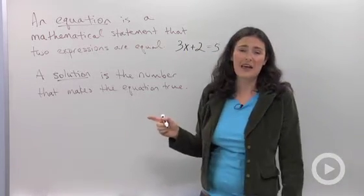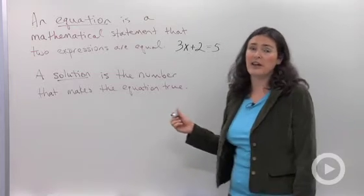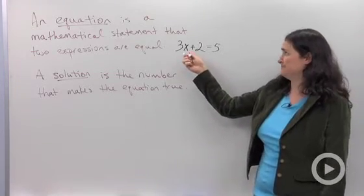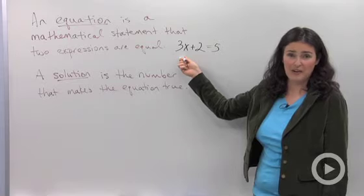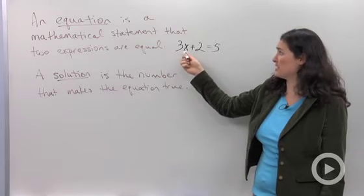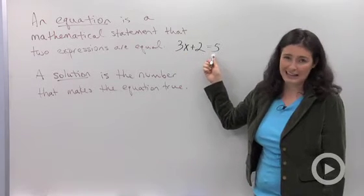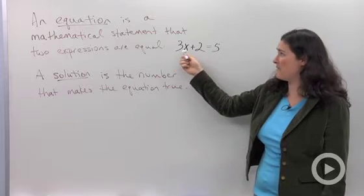The solution is the number that makes the equation true. So, like, for example, if I were to put 10 into that value for x and multiply 3 times 10, then add 2, I would not get the answer 5. That's not a valid solution.